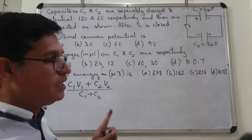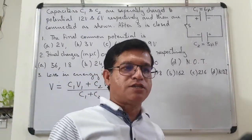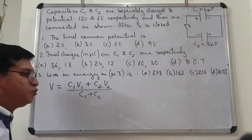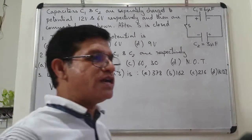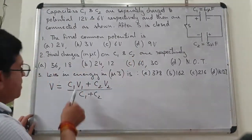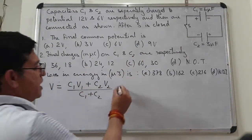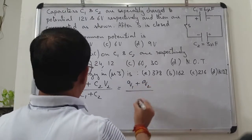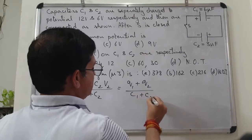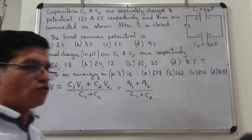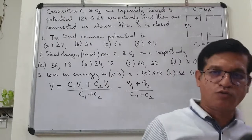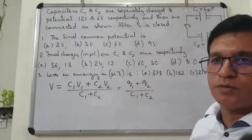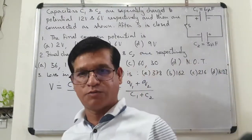एक important point याद दिला रहा हूँ: जब आप V1 और V2 की values substitute करो, तो उनकी sign के साथ करो। इसी तरह अगर Q1 और Q2 वाला formula यूज करो — C1V1 = Q1 और C2V2 = Q2 — तो वो values भी with sign substitute करनी हैं।